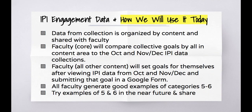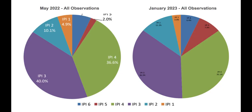Data collection has led us to determine that we should work as a staff to increase categories 5 and 6, which are higher-order thinking tasks. If we look at our January 2023 data collection cycle, we see that a majority of time was spent in category 3 in purple — which is students doing worksheets and teacher engaging — and category 4, which is teacher-led discussion or teacher-lecture.